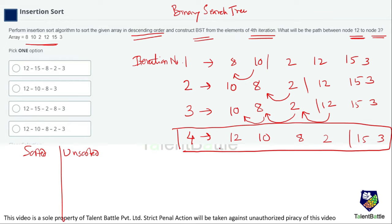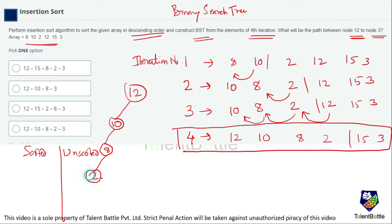Now constructing the BST from the fourth-iteration array [12, 10, 8, 2, 15, 3]. The rule is: larger elements go to the right and smaller elements go to the left. 12 is the root. 10 is less than 12, so it goes left. 8 is less than 10, so it goes left of 10. 2 is less than 8, so it goes left of 8. 15 is greater than 12, so it goes right of 12. 3 is less than 8 but greater than 2, so it goes right of 2.